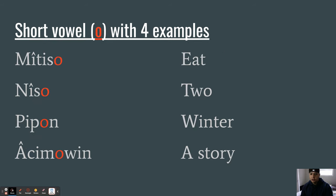Short vowel O with four examples. Listen to the O sound. Mîtso, eat. Nîso, two. Pîpon, winter. Âcimôwin, a story. I'll say those again for you. Re-listen for that O. Mîtso, Nîso, Pîpon, Âcimôwin. A story, winter, two, and eat.